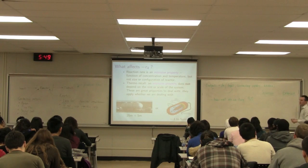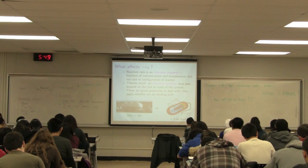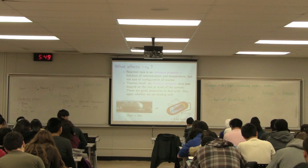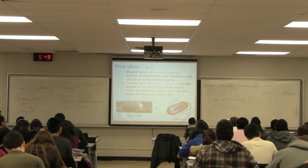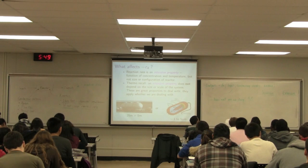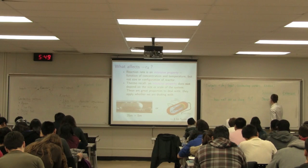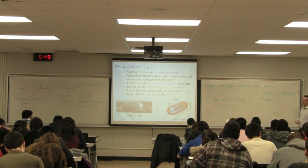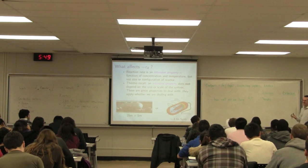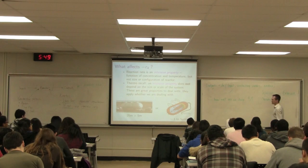An extensive property depends on the size of the system. An example is mass — the mass of the system is very much dependent on its size. Intensive properties include density, temperature, and molar volume (moles per volume). Mass flow rate — mass per unit time — would be an extensive property.